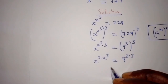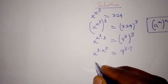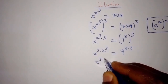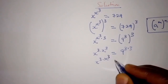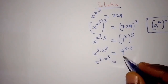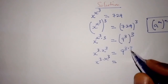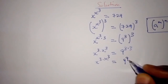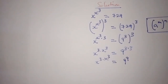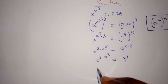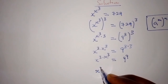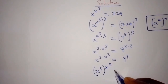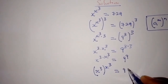So we have x power 3 times x power 3 is equal to 9 power 3 times 3. x power 3 gives us 9 power 9. We can write this as x power 3 into bracket x power 3 is equal to 9 power 9.